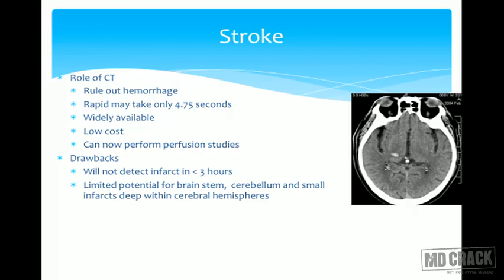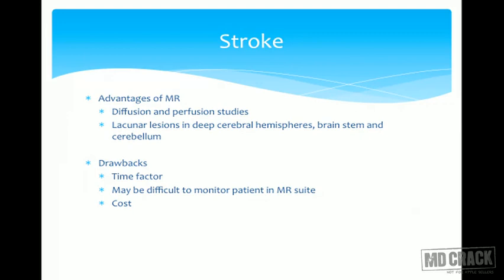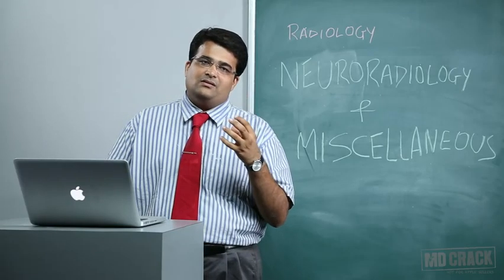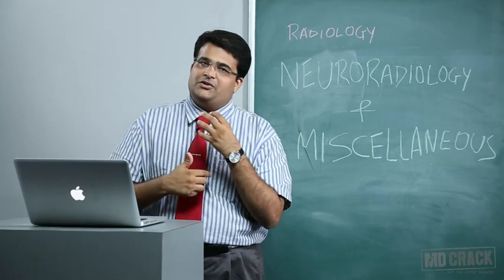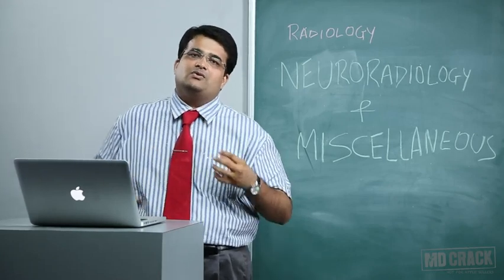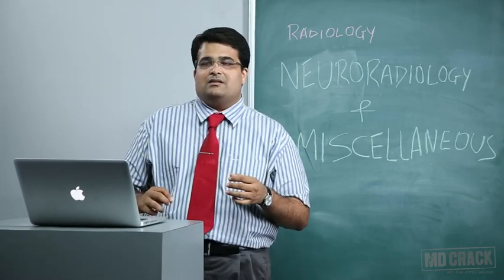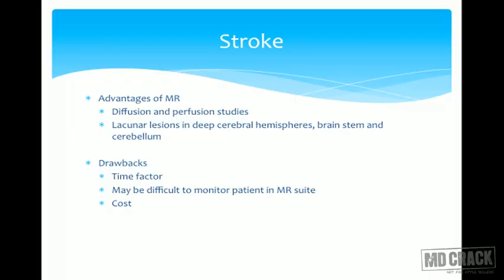Diffusion-weighted imaging (DWI) is extremely sensitive and can pick up strokes within 30 minutes. Perfusion studies identify the penumbra — the region around infarcted tissue that is potentially salvageable — so that if tPA is given, that tissue can be saved. Lacunar lesions in deep cerebral hemispheres, brainstem, and cerebellum are also easily detected on MRI.